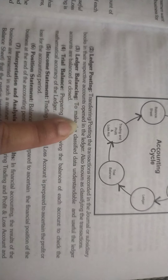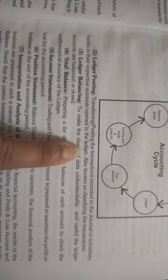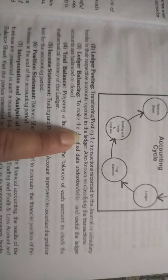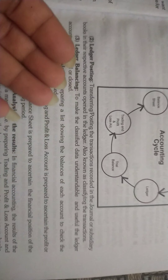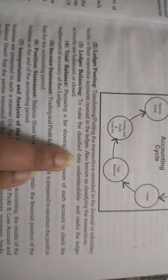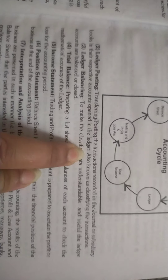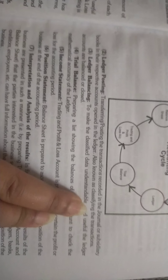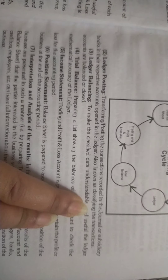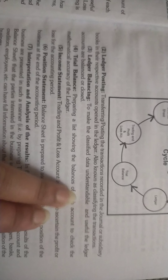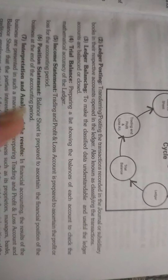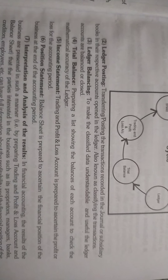Then we open the transactions in the ledger. This is also known as classifying the transactions. We can classify the transactions and determine which transaction is our debit and which transaction is our credit.